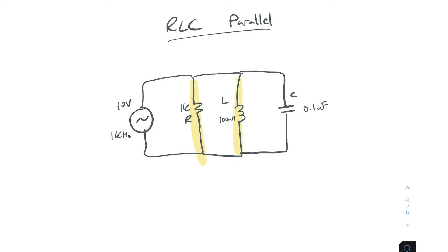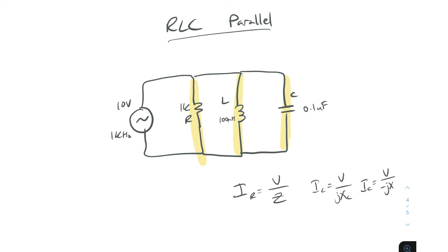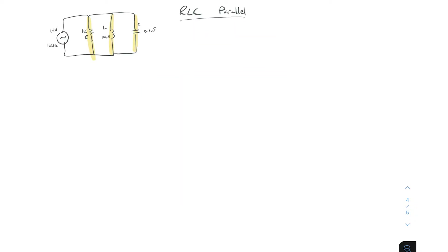To get the total current we need to find the current in each branch first. Since all voltages across each branch are exactly the same, we just need to get the reactance values and from there calculate the current in each branch: IR equals voltage over impedance, IL equals voltage over j·XL, and IC equals voltage over minus j·XC.